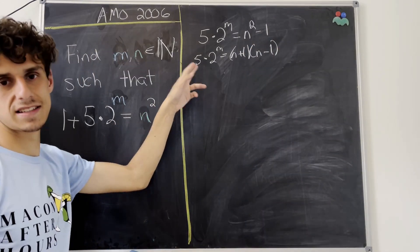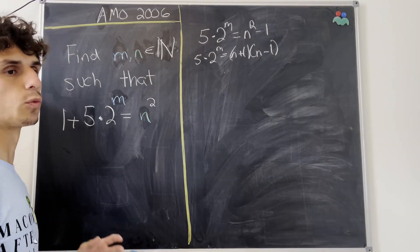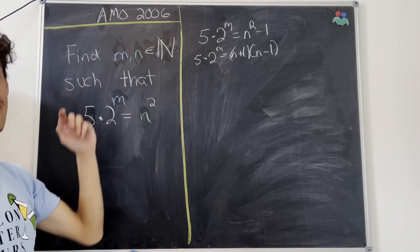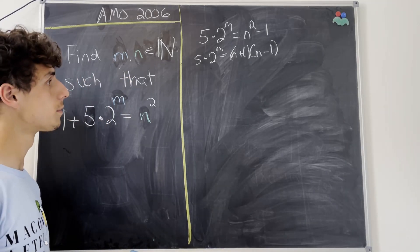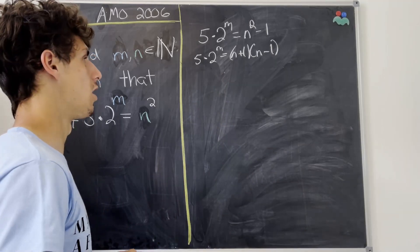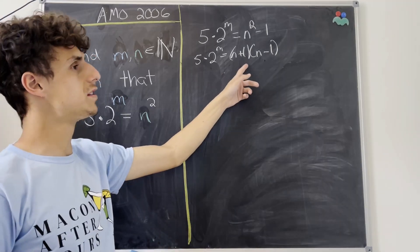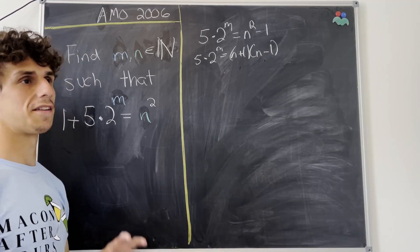But now we know this left-hand side is going to be even because it contains at least one factor of 2, because we know that m and n are both natural numbers, which means that this right-hand side also has to be even. And these two numbers, n plus 1 and n minus 1, have the same parity.